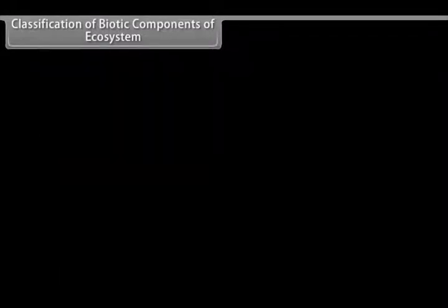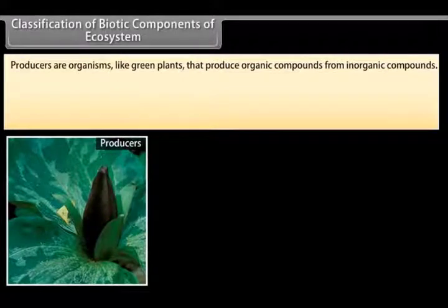Now we will learn in detail what are producers, consumers and decomposers. Producers are organisms like green plants that produce organic compounds from inorganic compounds.